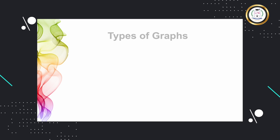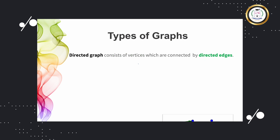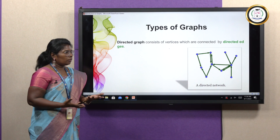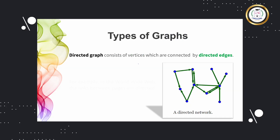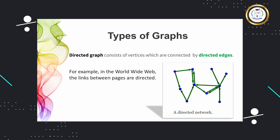The previous example was an undirected graph where the edges have no direction specified. Whereas if we consider a directed network, it is also called a digraph. A digraph is a graph with vertices and edges, but the edges are directed. For example, in the worldwide web, the links between pages are directed — there is only one way you can go from one vertex to another page.